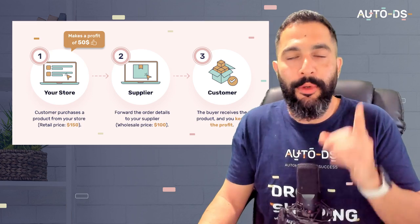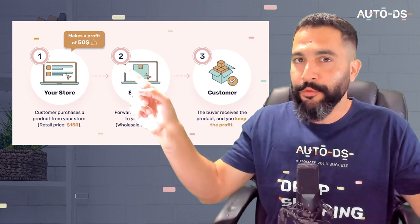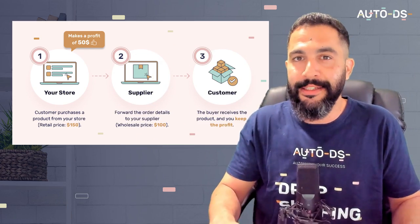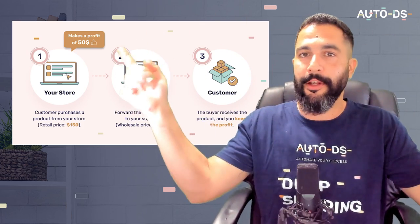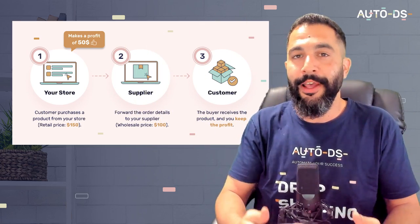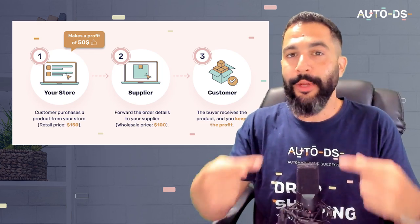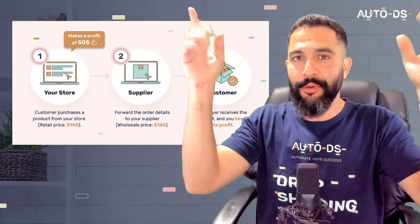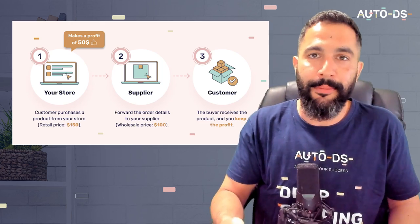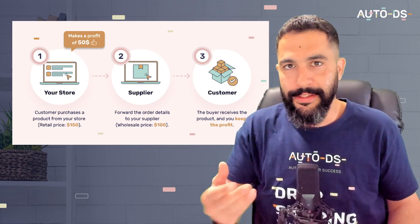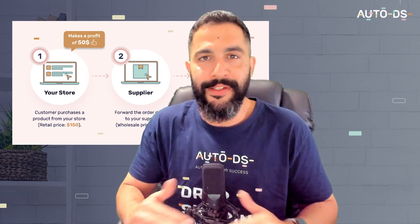Dropshipping is a business model that allows you to host an online store — like here on Etsy — and list products from dropshipping suppliers, meaning you don't have to hold anything in stock. I can have my Etsy store, research winning products to sell, import them to my store, and only after a customer purchases will I go to my supplier's website, purchase the product, and send it directly to my end customer. I keep the profit between what I paid the supplier and what the buyer paid me on Etsy. It's a very low risk, high reward business model, and that is why I've been dropshipping for over six years.